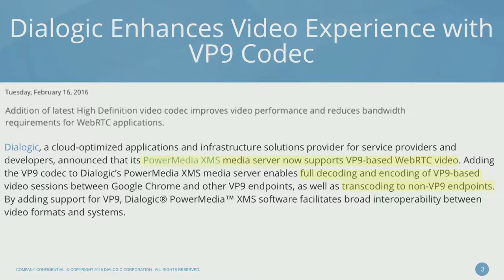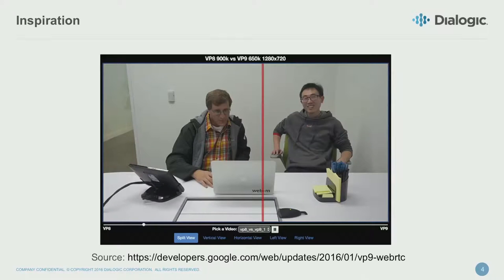I needed a way to test this, and what better way than getting inspiration from something provided by Google. This is something I saw at a WebRTC show, I think it was in San Jose or Florida — a demo that shows VP8 on one side and VP9 on the other, with VP8 on the left operating at a much higher bitrate. So I had my inspiration.